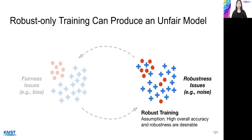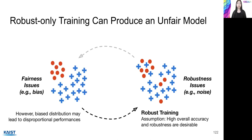Looking at the other direction, robust training may also have unfairness issues. The main goal of robust training is to obtain high overall accuracy in the presence of noise and poisoning in the labels or data. However, most of these techniques assume that the data is unbiased, which may be a problem from a fairness perspective. If the data has a biased distribution where one sensitive group is much smaller than the other, then robust training may only benefit the larger sensitive group and thus have a disproportionate performance against the smaller group. Even if robust training obtains overall high accuracy, it may also result in low fairness.